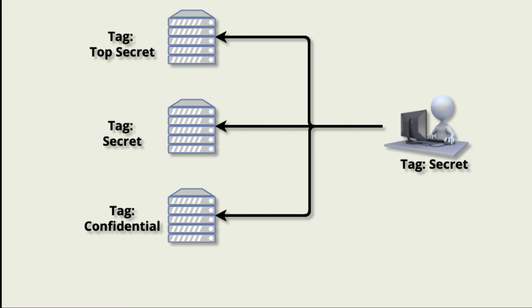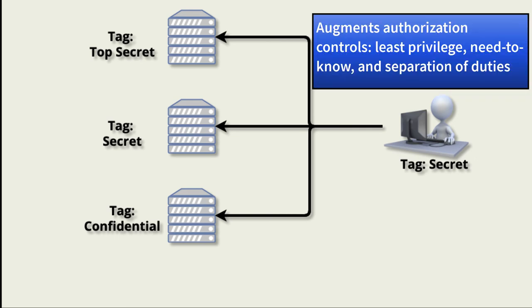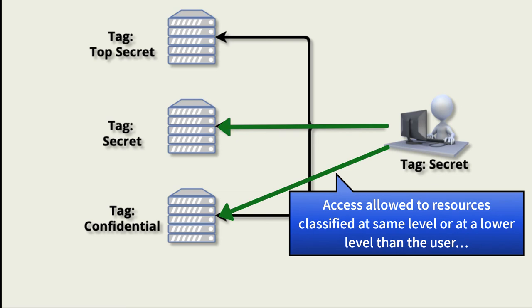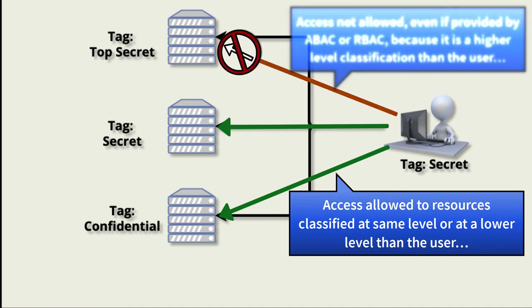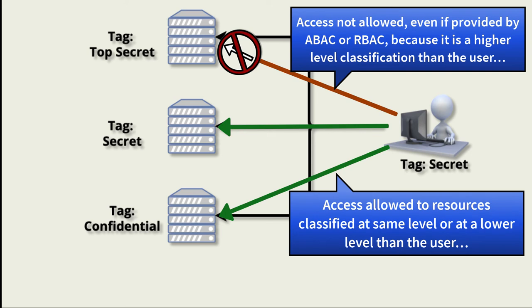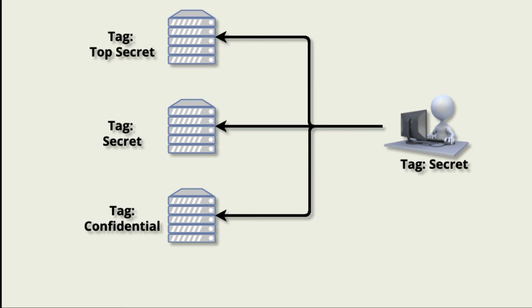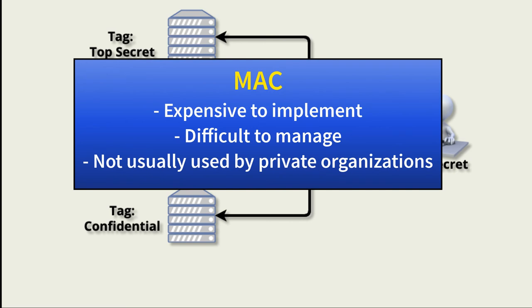Mandatory access control uses tagging to control what a subject can access, causing the protected system to protect itself. This tagging is often used in conjunction with RBAC or ABAC. Both the subject and object have classification tags — a subject can access a resource with a lower or equal classification, if least privilege, need to know, and separation of duties allow it. MAC is an excellent way to fill gaps left by other authentication and authorization safeguards. MAC is usually not extensively implemented in private industry because it's so complex and expensive, but it is often a key component in protecting government information, both in government agencies and contractor environments.